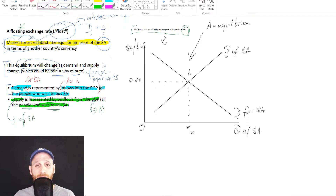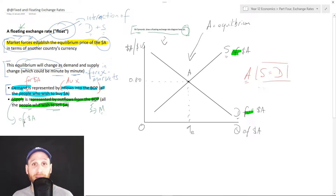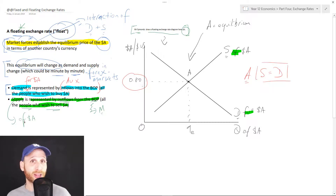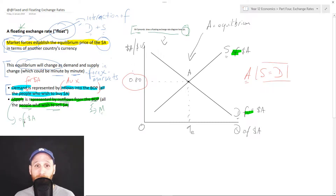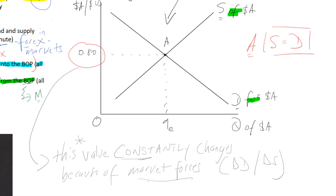Pay attention to that language: we look at the supply of Aussie dollars and demand for Australian dollars — and again, that could be for whatever currency you're looking at. At point A, supply equals demand, we get our equilibrium. In this example, our equilibrium is where one Australian dollar buys us 80 cents US. The dollar will change depending on the impact of market forces — an increase in demand or a decrease in supply, or a decrease in demand or an increase in supply. This equilibrium value changes constantly because of changes in market forces.